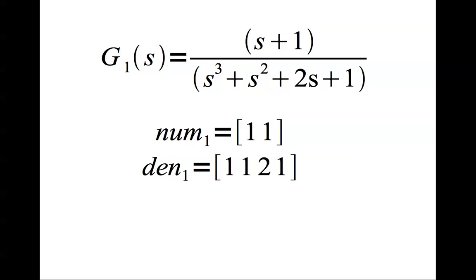The numerator here has a one and one. One corresponds to this one, which corresponds to the constant term. This one corresponds to the coefficient of s. Similarly in the denominator, this one corresponds to the constant term, the two represents the coefficient of the s term.